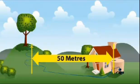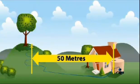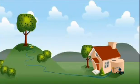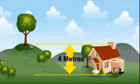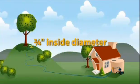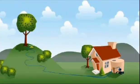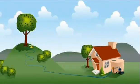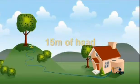From this point, she has 50 metres of pipework to the furthest sprinkler in her yard. This sprinkler is located at the top of the hill, which is 4 metres higher than the pump. The pipe she is using is 3 quarter inch in side diameter and she requires a flow rate of 45 litres per minute. The sprinkler has a demand pressure of 15 metres of head.